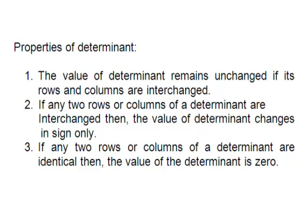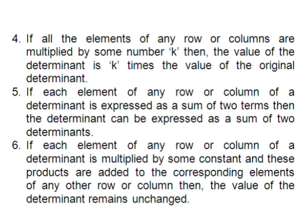Property 3: If any two rows or columns of a determinant are identical, then the value of the determinant is zero. Property 4: If all the elements of any row or column are multiplied by some number k, then the value of the determinant is k times the value of the original determinant.